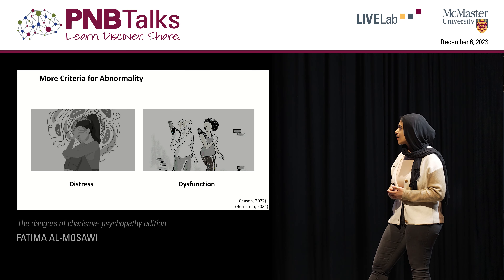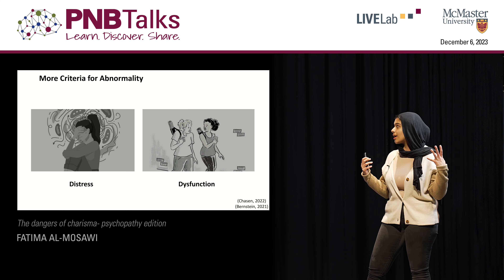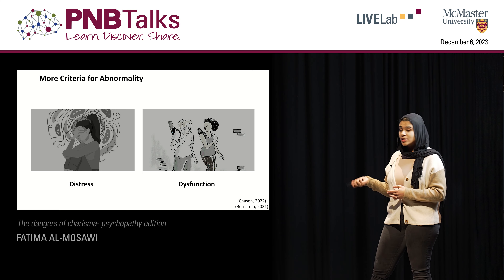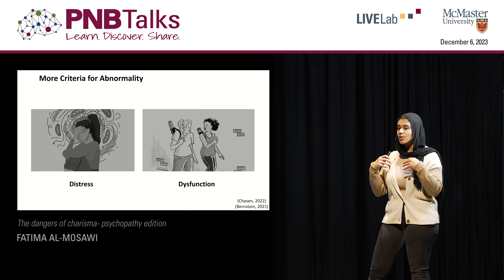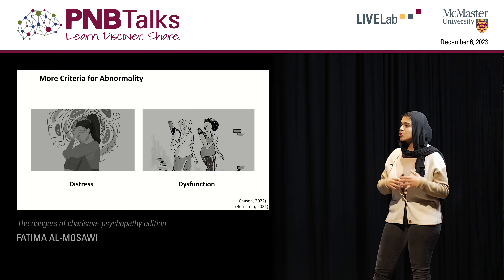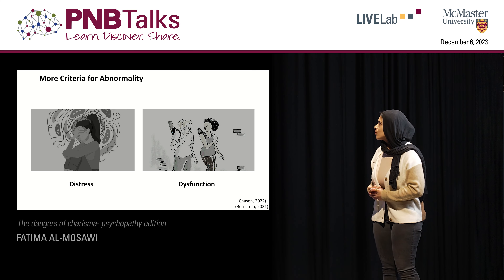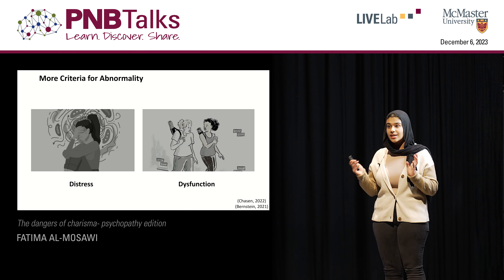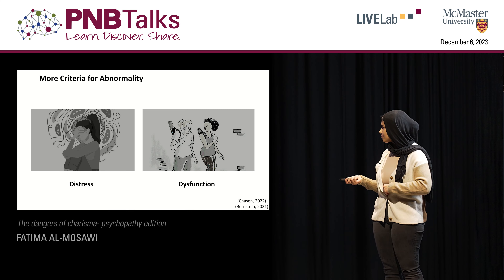Moving on to more criteria for abnormality — we just touched upon deviance, and now we're going to get into distress and dysfunction. Starting with distress, this is usually experienced by the individuals who are closest to the person with the disorder, because personality disorders are considered largely egosyntonic, meaning the person with the disorder doesn't view their symptoms as problematic — which largely complicates both diagnosis and treatment. Moving on to dysfunction, this illustrates how these individuals have difficulty carrying out day-to-day tasks, with dysfunction seen particularly within social interactions, whether with family, friends, or romantic partners.